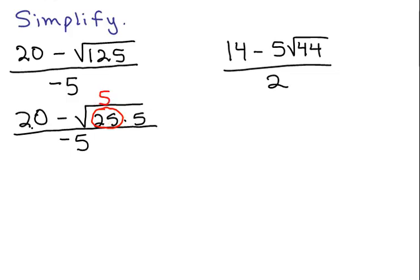So on the next step, what I really have is 20 minus 5. That's on the outside of the square root. And I have the square root of 5 still inside. Now notice the whole thing is over negative 5.